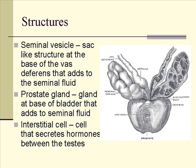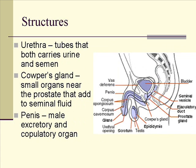There's a structure called the interstitial cell, located between the testes, and it's responsible for secreting hormones to keep the male reproductive system properly functioning. The urethra is the tube that leads outside of the body. In a male, it has two functions: it carries both urine and semen. Females do have a urethra, but it only carries urine. Another accessory gland is the Cowper's gland, which is near the prostate and also adds to seminal fluid.